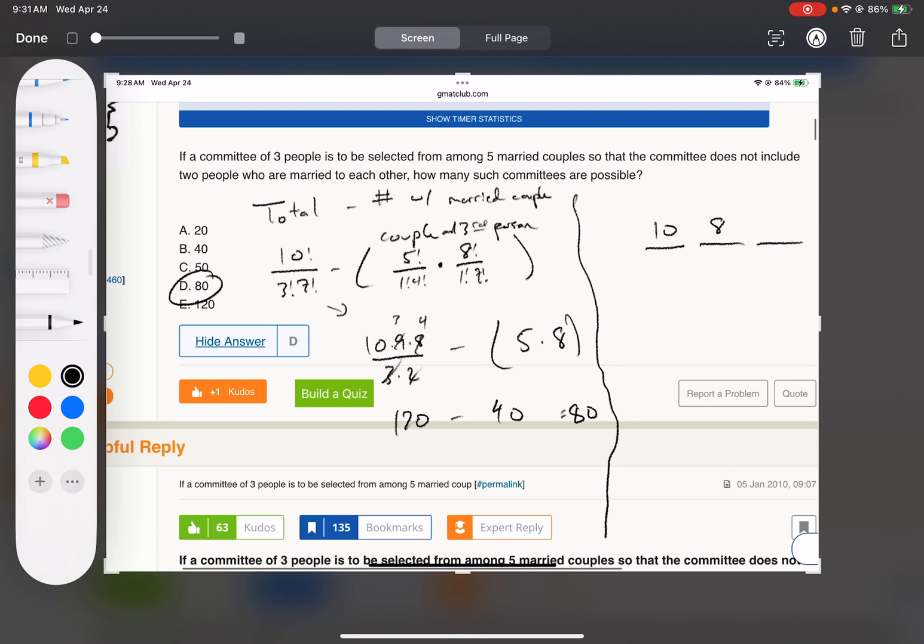And then that applies as well for the next one. I can't pick that person or their spouse. So basically, 2 people come out every time because I take out the person I picked and their spouse.